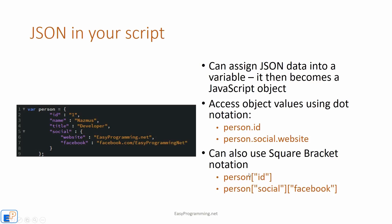You can also use square bracket notation. So if you're familiar with arrays and want to keep it simple, you can do person['id'], or person['social']['facebook'], etc. You can have as many dimensions to JSON as you want.